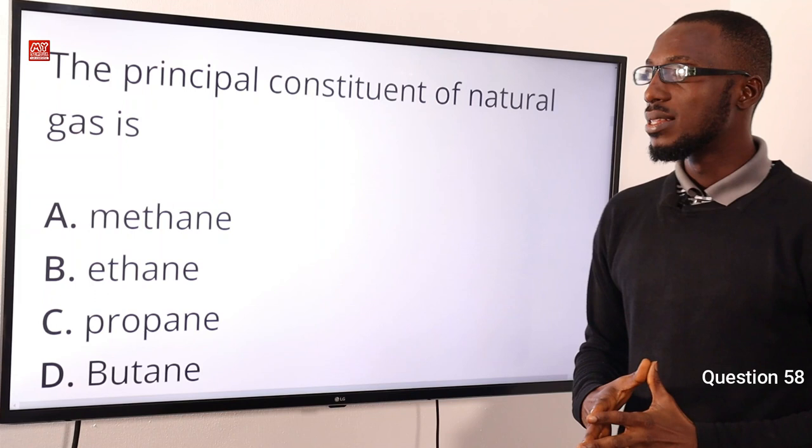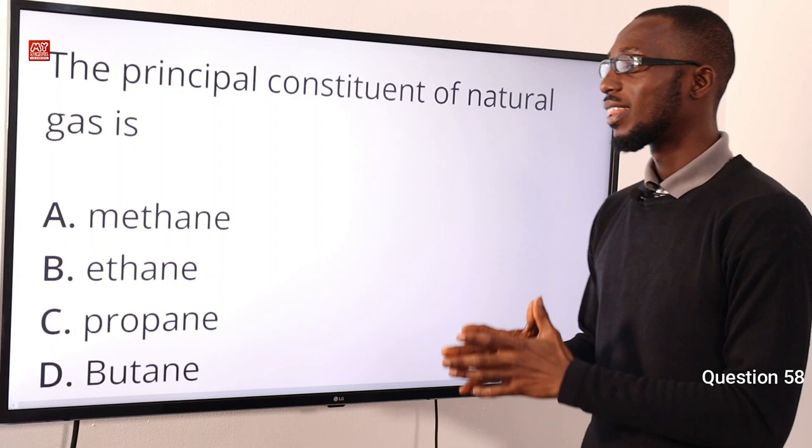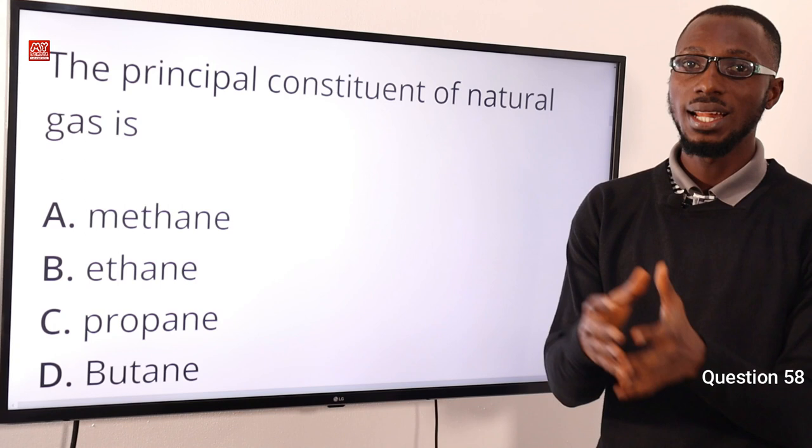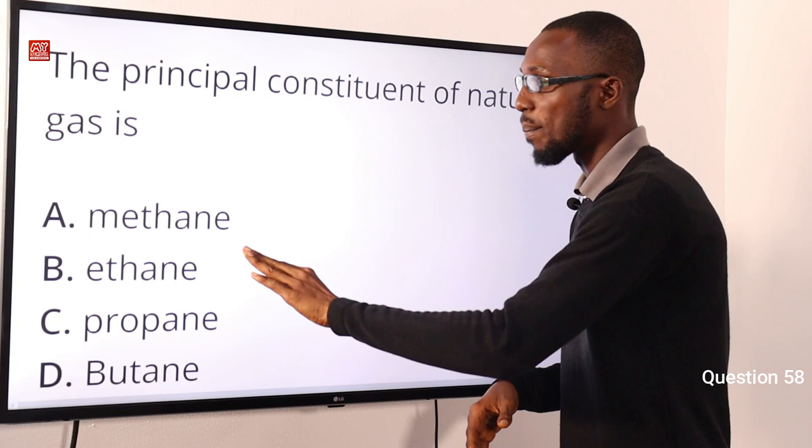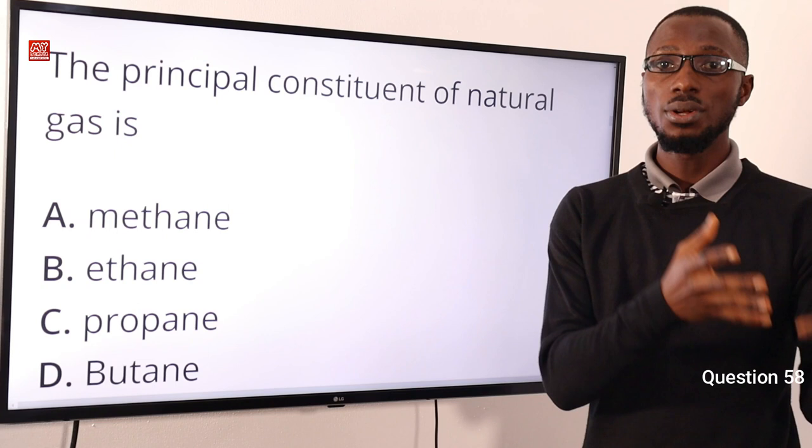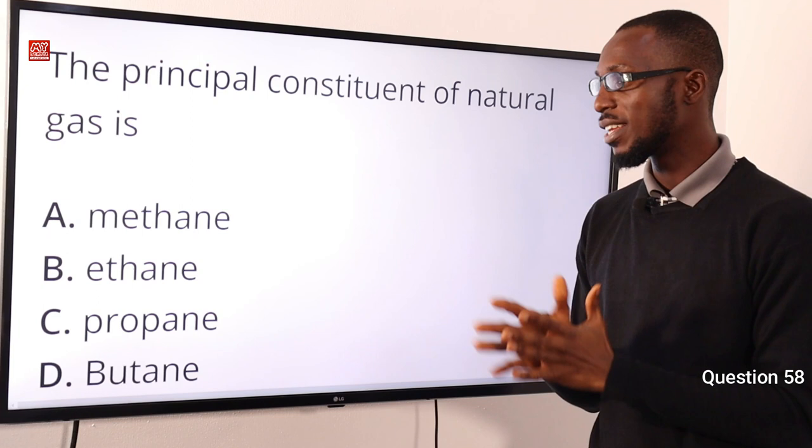Question 58: The principal constituent of natural gas is methane. Water gas consists of carbon monoxide and hydrogen. Natural gas, via the Bosch process, can be used for the industrial preparation of hydrogen. The correct option is option A for methane.